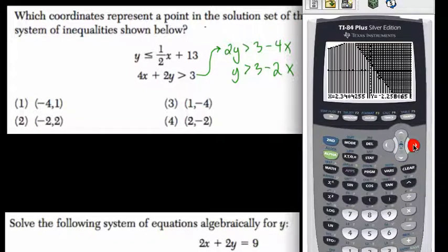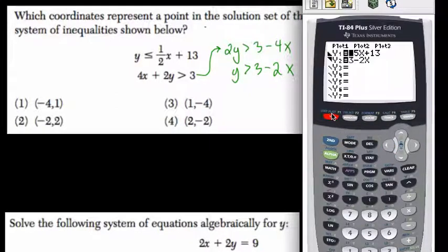So 1, negative 4, if you scroll over as well, it's also not in the solution set. Let me go back. Oh, that's my mistake.